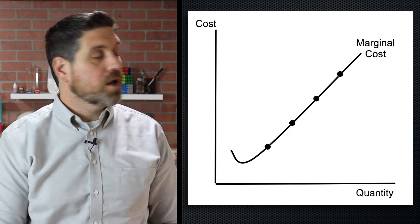Notice that I didn't even add an average total cost curve. You actually don't even need it to figure out the profit-maximizing quantity. So whether the ATC is down here or up here, you're still going to produce where MR equals MC.